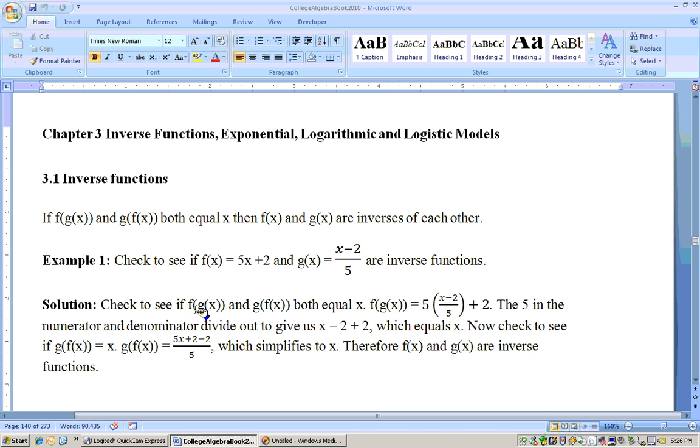They're inverses if f of g of x and g of f of x both equal x. So let's check if f of g of x equals x. To get f of g of x, I've got to substitute the g of x function in for x on this function. I'm substituting this right here in for x. So that would be 5 times x minus 2 over 5.